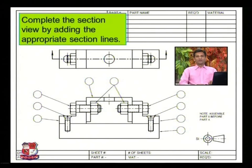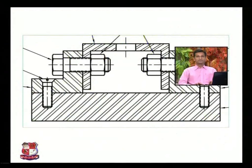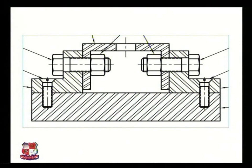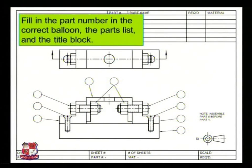Let's do the exercise for this. Assemble part 5 before part number 4. Here a bill of material is prepared. This is the component which shows the section lines, and these components are cut to show the internal details - the section lines are drawn over here. Fill in the part number in the correct balloon, the parts list, and the title block - this is the exercise that you can do.